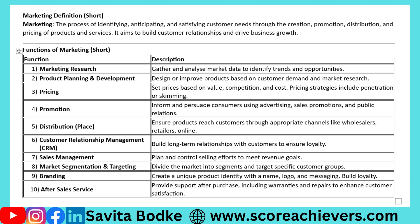5. Distribution (Place). Distribution is all about ensuring that the product reaches the customer at the right place and time. It includes choosing the right distribution channels like wholesalers, retailers, or e-commerce platforms. For example, think of Amazon. They have a robust distribution network that allows customers to receive products quickly, no matter where they are. Efficient distribution makes it convenient for customers to access products, which is key to a company's success.